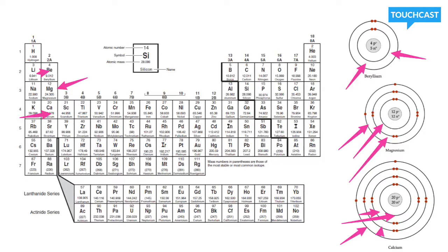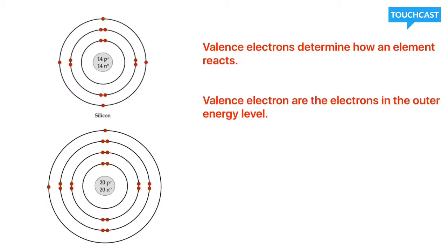Alright, the next thing we're going to look at is valence electrons, and that's going to deal with just the outside layer of the atom. Valence electrons are the electrons that are found in the outermost layer of an atom. They're only the electrons here in the outside layer.